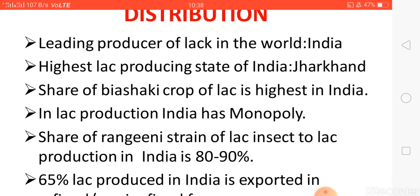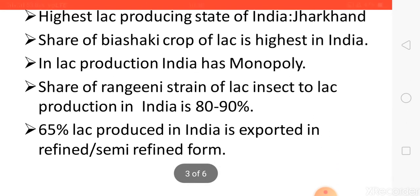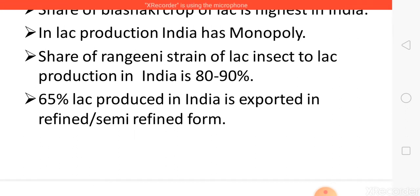Lac production in India has gained monopoly. There are two strains: Kosumi strain and Ragini strain. Of both strains, Ragini strain accounts for 80 to 90% of total lac production in India. Of the total lac produced in India, about 60 to 65% is exported in refined or semi-refined form.